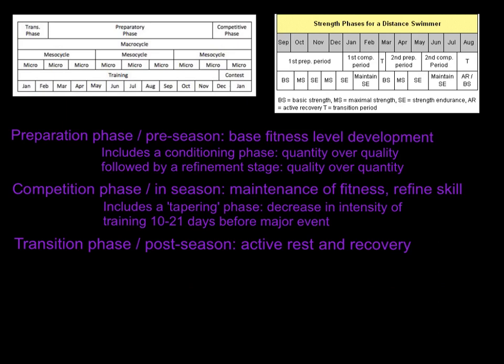Splitting the season down into phases, some terms will be familiar and some less so. At the start we have a preparation phase, also known as pre-season. Pre-season is about developing base fitness levels. We include a general conditioning phase, which is quantity over quality - that hard graft of hill running and long distance runs, lots of heavy, boring but hard fitness training to develop a good baseline fitness level. After a few weeks you refine it, going quality over quantity, introducing sharpness, speed, agility, and quickness.